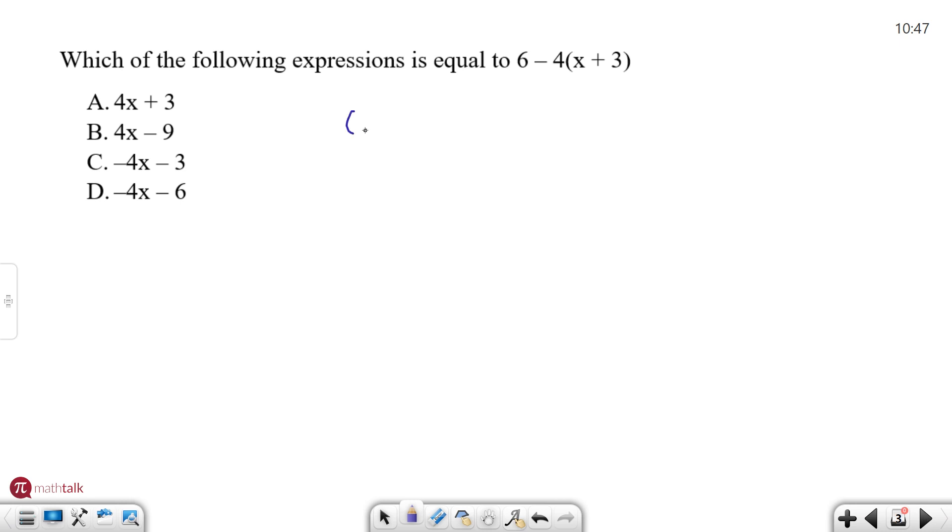So we have 6 - 4(x + 3). Distributive property says we take the number outside the parentheses and multiply it by the two numbers on the inside. Make sure you keep that minus sign in front of the 4 because really it's like a negative 4 and we want to distribute the sign as well. So we have 6 - 4x and then - 12.